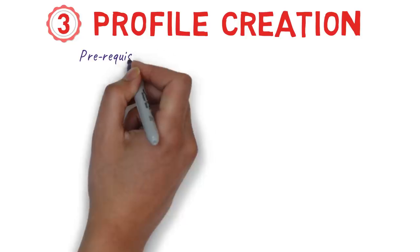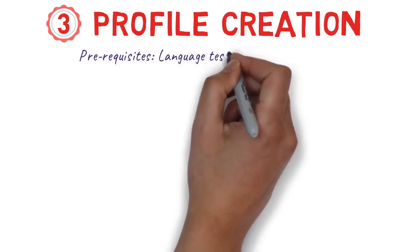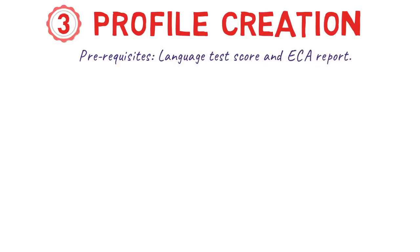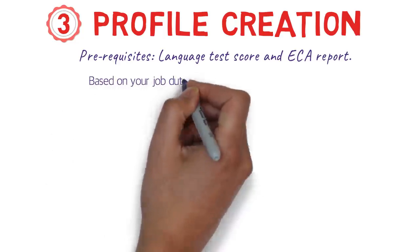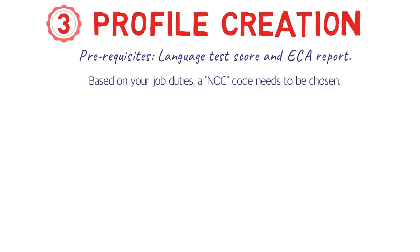Step three is creating your Express Entry profile. Before creating the profile, you need your language test score and ECA report ready. Based on your job duties, you also need to choose a NOC code. NOC stands for National Occupation Classification — it's a system to classify jobs grouped by the type of duties a person performs.